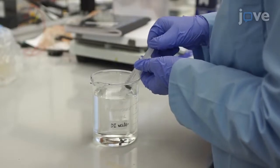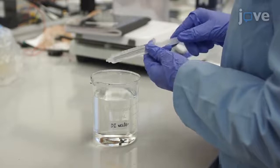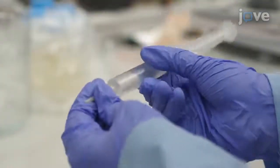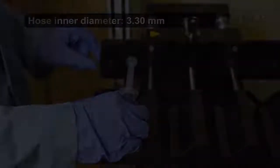To set up the programmable pump, fill a 12-milliliter plastic syringe with distilled water. Next, insert a plastic dispensing tip on the syringe. Then, mount the syringe in the syringe pump.